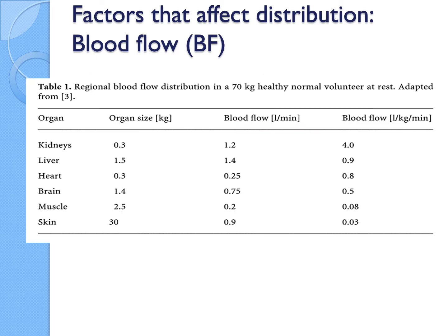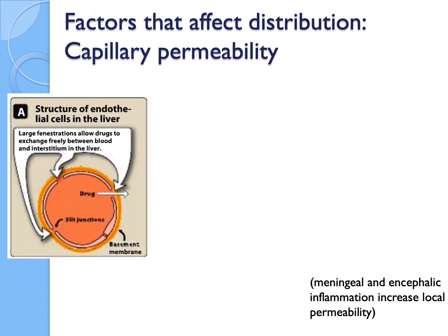Another factor affecting distribution is blood flow to the different organs — the higher the blood flow, the more exposed that organ is to the drug. Blood flow is highest in the kidney and liver, and lower in other organs like muscle and heart. When expressed per kg per minute, the kidney has the highest blood flow per unit weight since it is a relatively small organ. Standard pharmacokinetic references typically assume a healthy 70 kg volunteer.